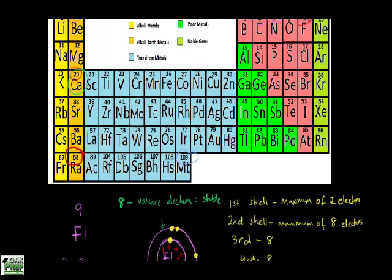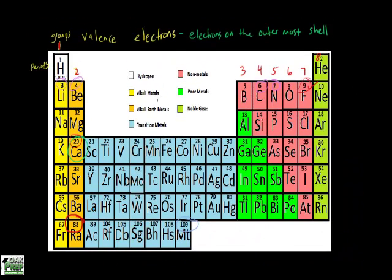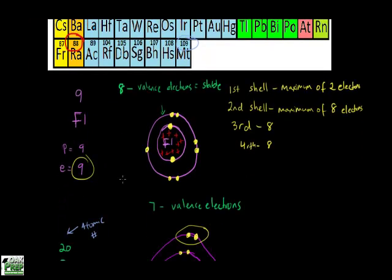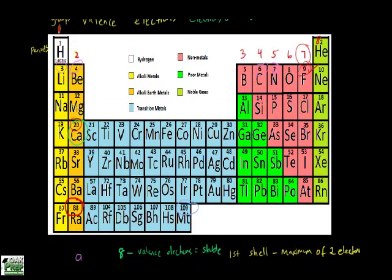So we number the groups: 1, 2, then skip the transition metals and continue 3, 4, 5, 6, 7, and 8. For fluorine — how many valence electrons does it have? Simply look at the group it's in. Fluorine is in group 7, so right away we know it has 7 valence electrons. For calcium, it's in group 2, so it has 2 valence electrons. And the element with atomic number 88 is in the same group as calcium, so it also has 2 valence electrons.